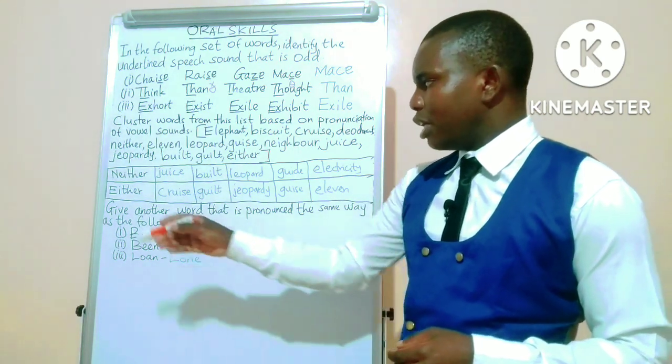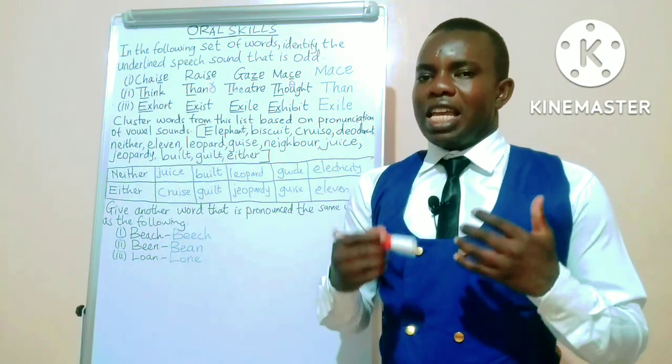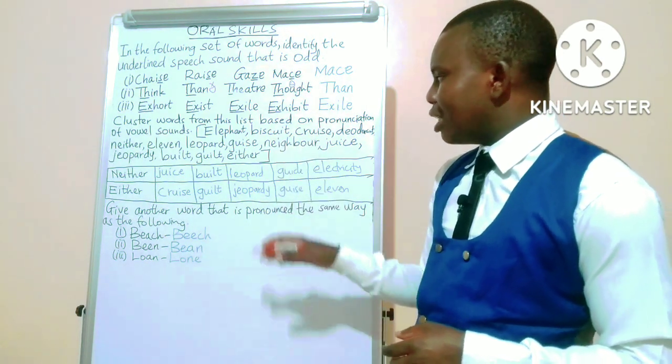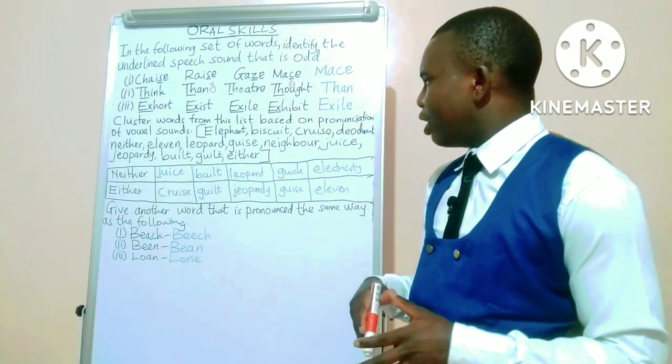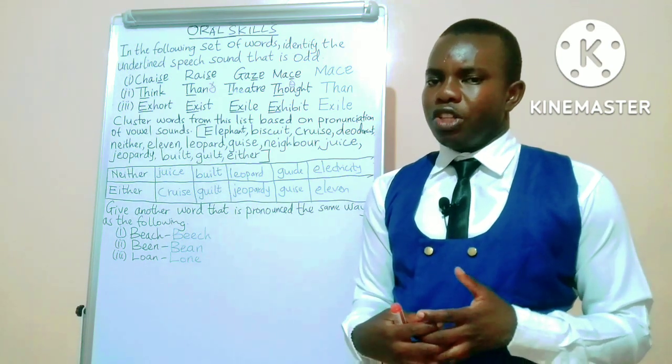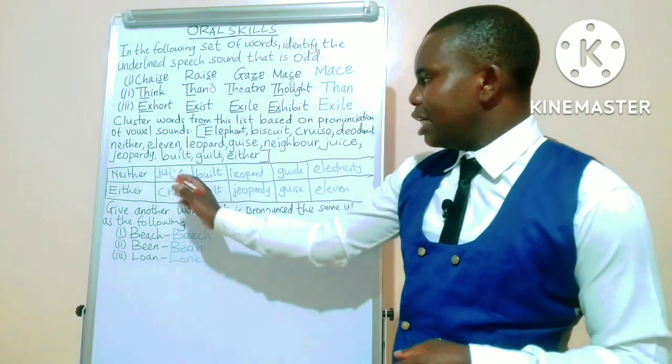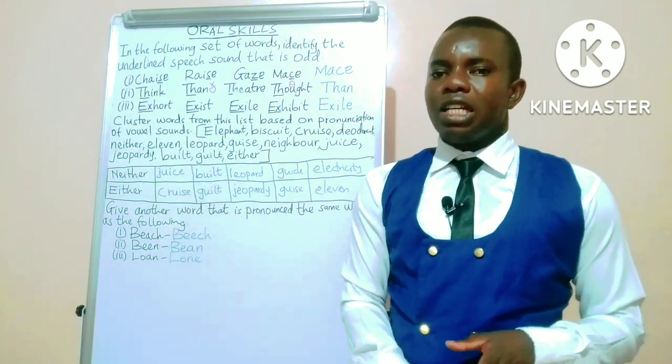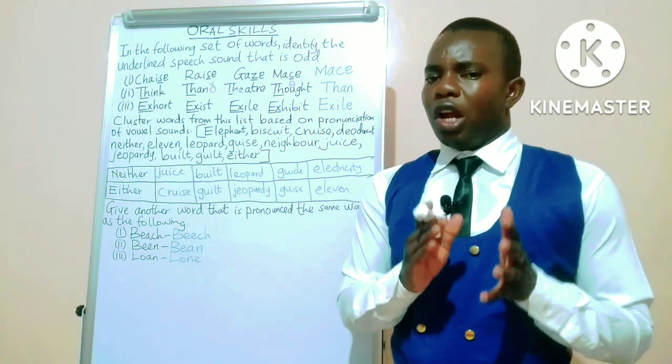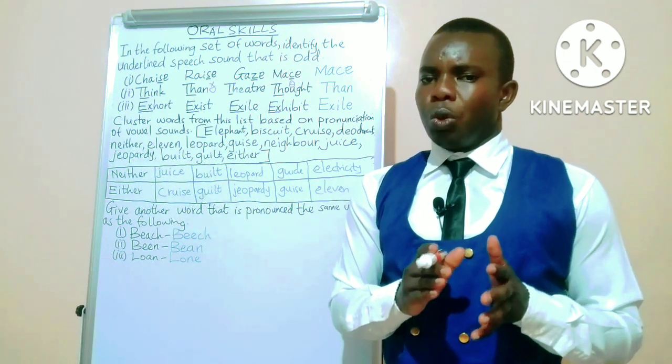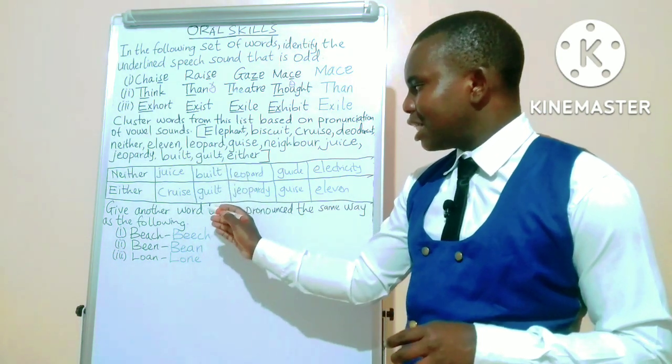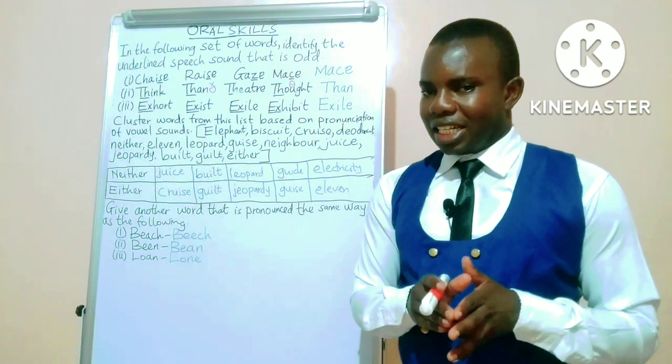Looking at the jumbled words here, some words that can be clustered together based on the similarity of vowel sounds: we can have juice and cruise - they have the long vowel sound /uː/ in both of them. Again, we have belt and guilt with the sound /ɛ/.